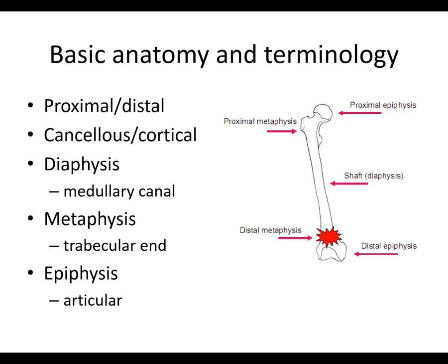Other basic terminology: proximal is towards the center of the body, and distal is further away. So in the femur, the distal end is down here and the proximal end is at the hip joint. You have cancellous bone versus cortical bone. Cortical bone is that thick, dense bone found mostly in the diaphysis of the femur, although you have a thin cortex everywhere else. Cancellous bone predominates in the metaphysis and in the epiphysis. The diaphysis also has a medullary canal where you have bone marrow. The metaphysis is the trabecular end, and the epiphysis is the articular end.